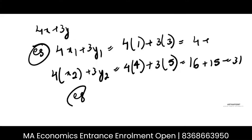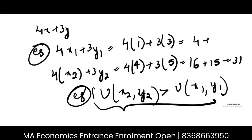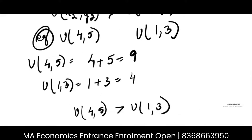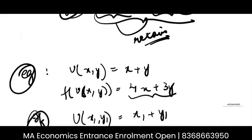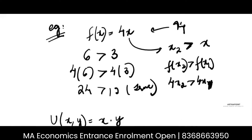So we do get that the utility from (x2, y2) — which is 31 — is greater than the utility from (x1, y1) — which is 13. This transformed utility function is a function of the initial utility function, and it also gives a higher utility for the preferred bundle. So that is, in a way, a monotonic transformation.